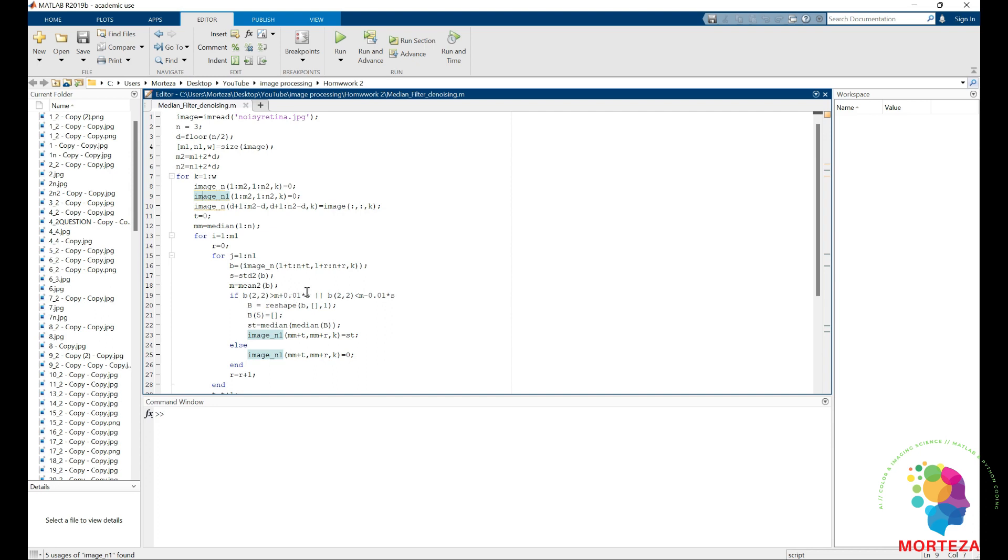If it falls between those values that I show, it's not noise. Otherwise, it's noise. So if it's outside, it's noise and I would apply the median filter in here. Otherwise, I would just put zero.